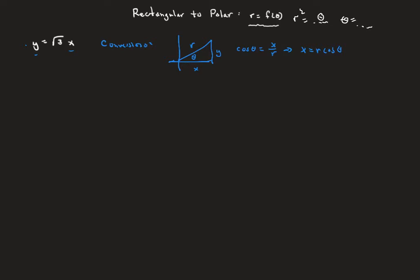We're going to replace x with r cosine theta. Likewise, sine theta is opposite over hypotenuse, which is y over r, which means y equals r sine theta. So we'll replace the y in our equation with r sine theta. The y becomes r sine theta, the square root of three stays as it was, and the x gets replaced by r cosine theta.